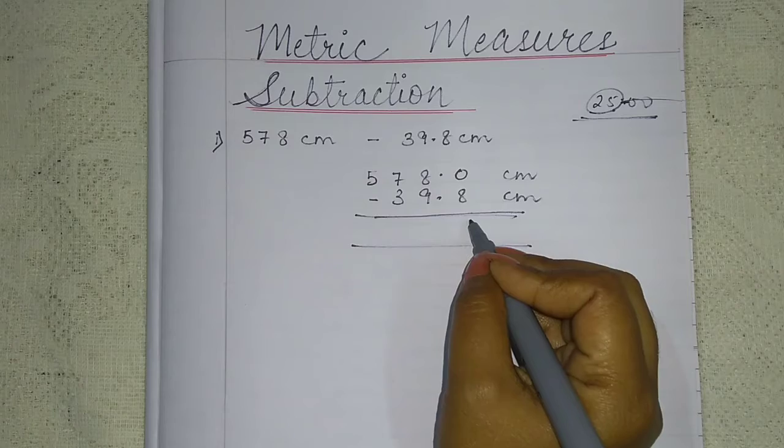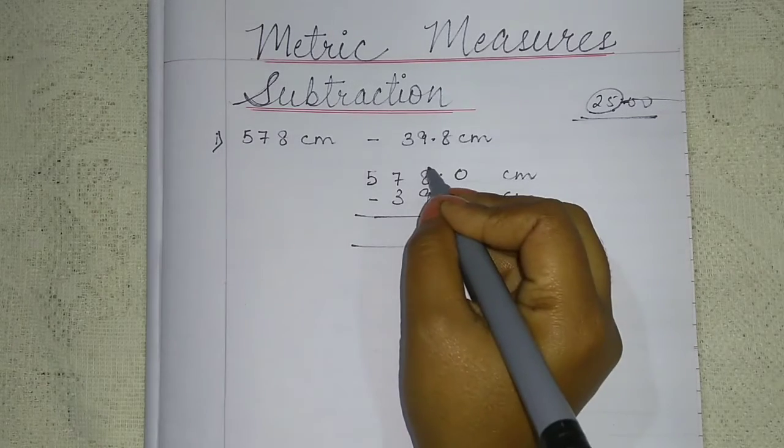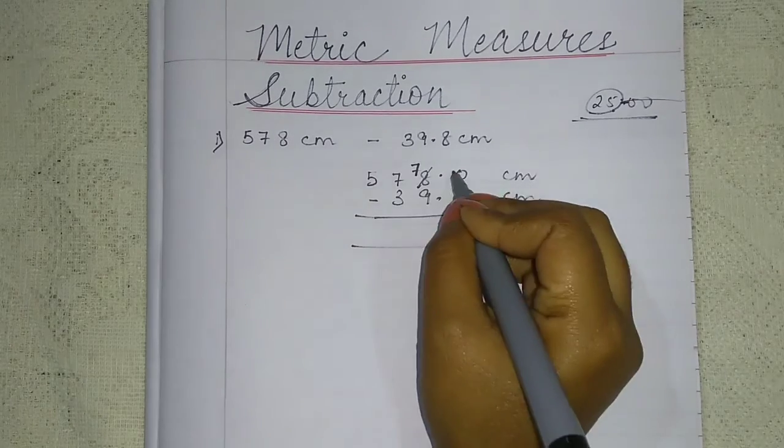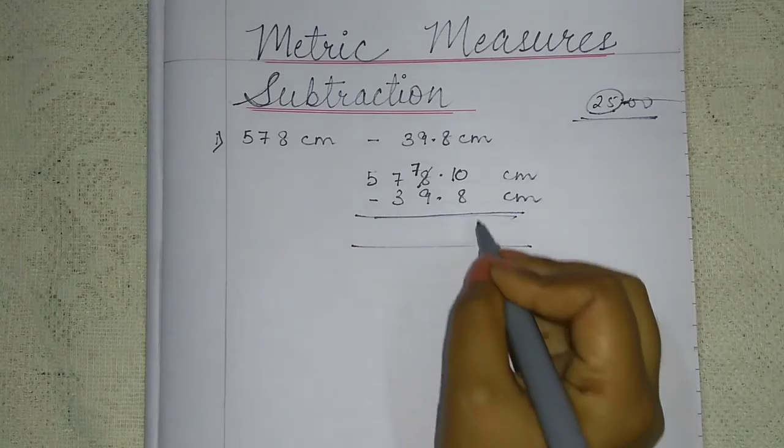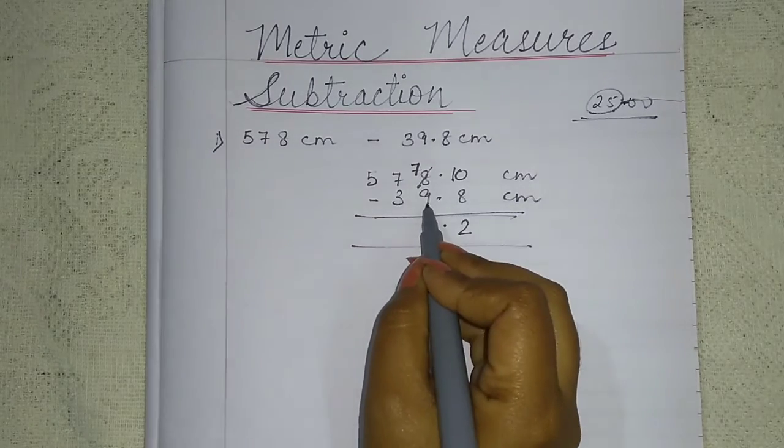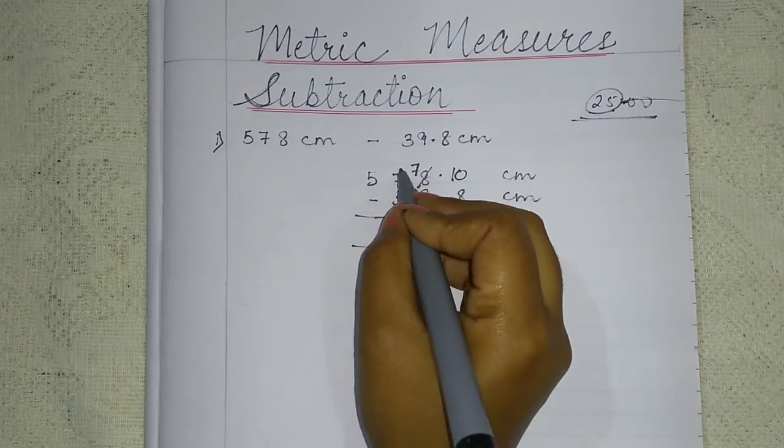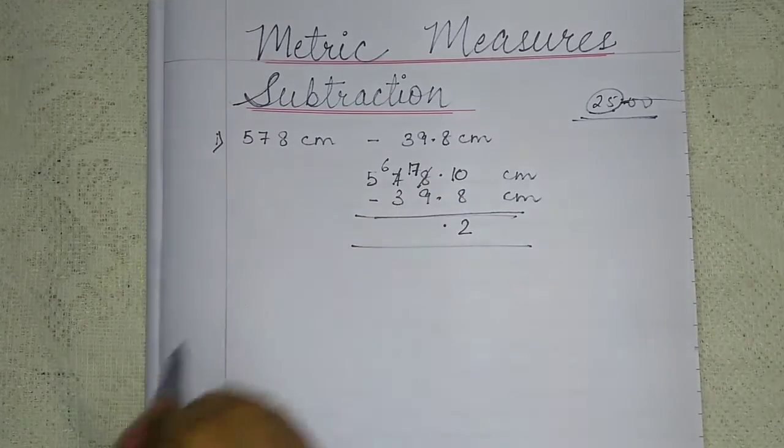Zero minus 8, does it happen? No. So this is 8, you have 7, this is 10. Now 10 minus 8 is 2. 7 minus 9? No. This 7 will become 6 and this will become 17.